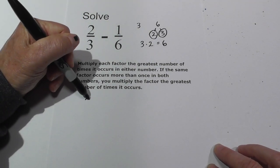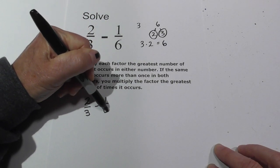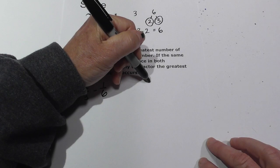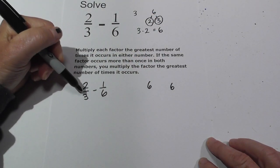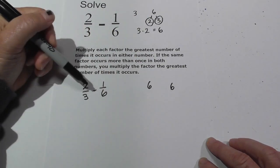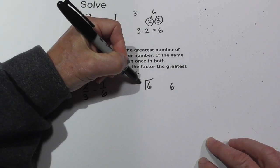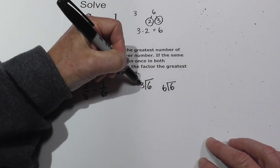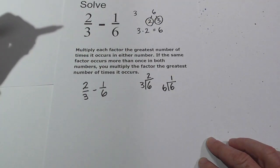Now I'm going to rewrite two-thirds minus one-sixth. I'm going to write our common denominator of six. The next thing I do is divide six by the denominator of both fractions — so six divided by three and six divided by six. Three goes into six two times; six goes into six one time.